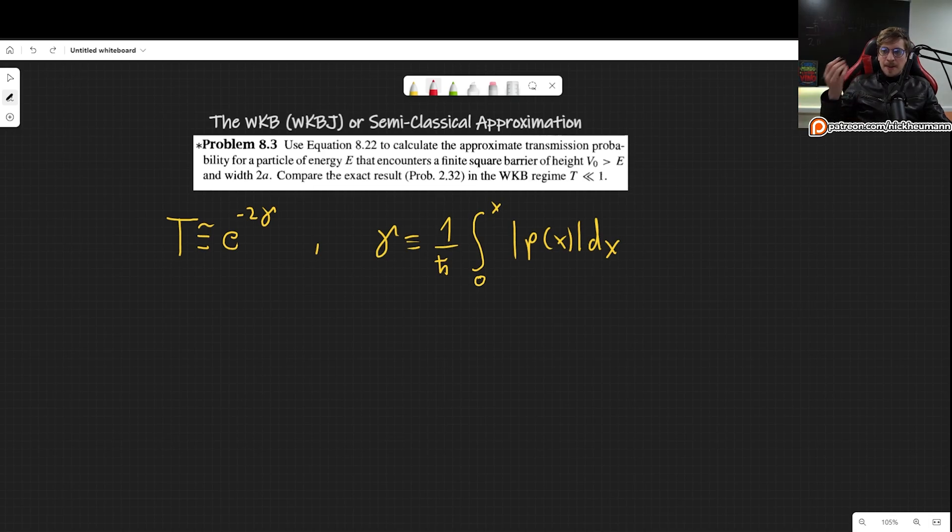This problem basically asks us to determine the transmission coefficient using the previous results that we found, which are these right here, for the case where we have a finite square barrier of height V0. We can always shift our axis, so we have this finite square barrier of width 2a.